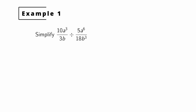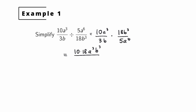We begin with an example. We first start by rewriting this division as a multiplication. So we write the first fraction as the same: 10a cubed over 3b. Then we multiply by the reciprocal of the second fraction: 18b cubed over 5a to the sixth. From here it's simply a multiplication problem. We multiply across the numerator to get 10 times 18 times a cubed times b cubed, and across the denominator to get 3 times 5 times a to the sixth times b. Notice we don't multiply out the numbers because we want to make simplifying those fractions simpler.